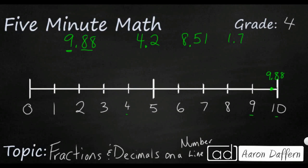The next is 4.2 or 4 and 2 tenths. And so it's going to be between 4 and 5. But that 2 tenths is not even halfway through. Halfway is 4.5. So I'm going to put that just a little bit past 4.